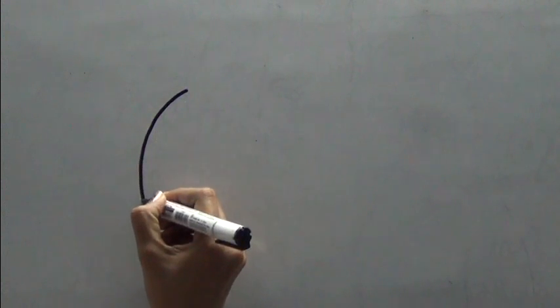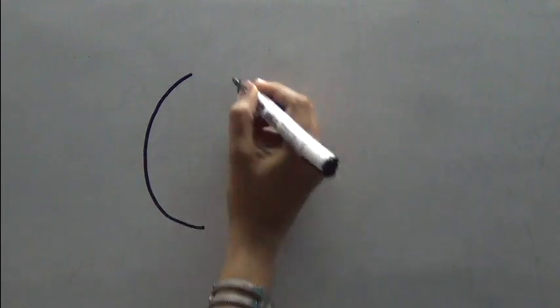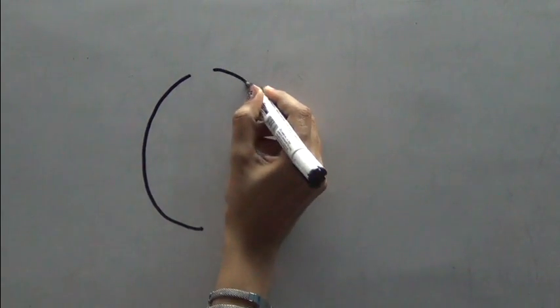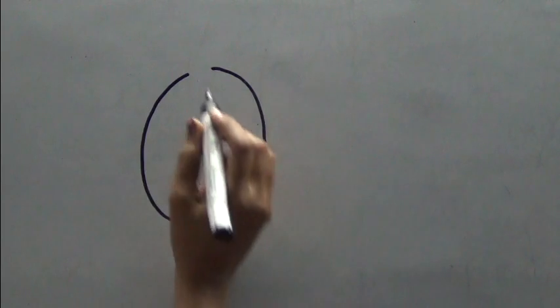First make a small C towards your left. Make a similar but inverted C towards your right. Note, I have kept a little gap while making the two Cs.